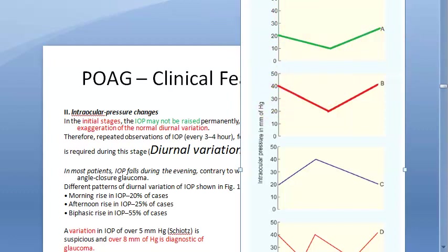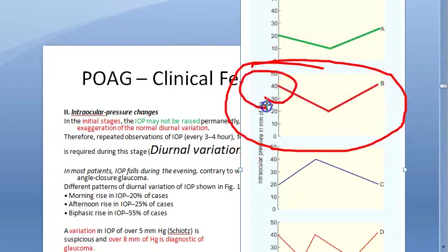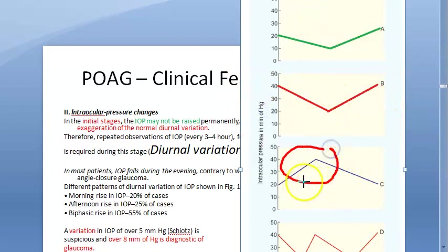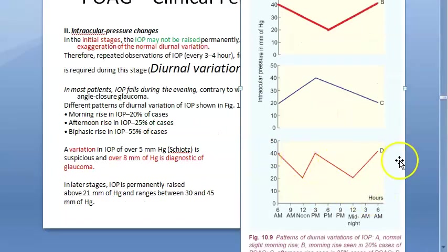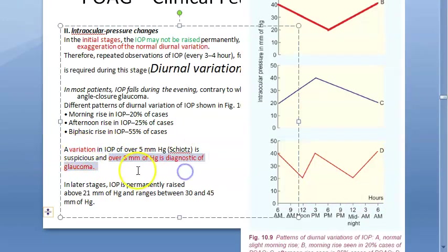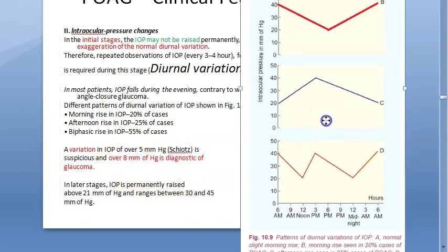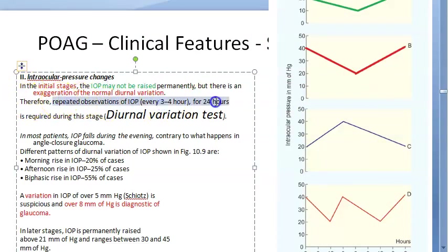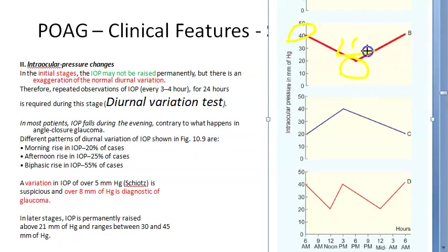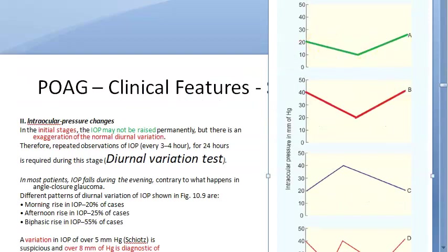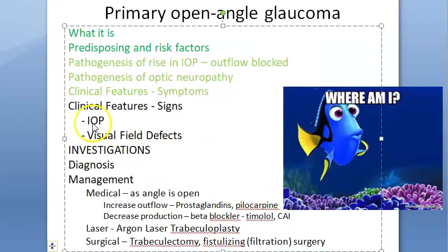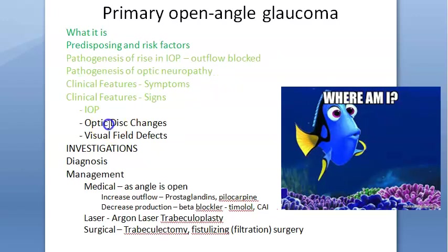Diurnal variation test: IOP is measured every 3–4 hours over 24 hours. A variation greater than 8 mmHg is diagnostic of glaucoma; variation of around 5 mmHg is suspicious. For example, a patient with IOP of 40 mmHg in the morning and 20 mmHg later has a difference of 20 mmHg — clearly diagnostic. Biphasic variation patterns are also seen.